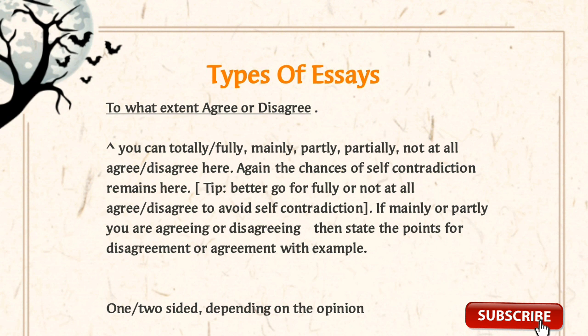When we are agreeing and giving ideas, explanations, and support, we can elaborate in a better way rather than agreeing or disagreeing in a partial way. If we have only one idea and on that idea we say we are agreeing and then also disagreeing, this causes contradiction in 'to what extent do you agree or disagree' essays.